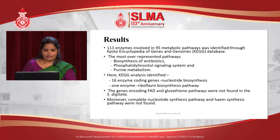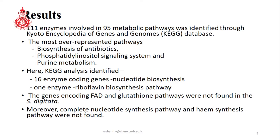In the results, 111 enzymes involved in 95 metabolic pathways were identified through the KEGG database. The most overrepresented pathways are biosynthesis of antibiotics, phosphatidylinositol signaling system, and purine metabolism. KEGG analysis identified 16 enzyme-coding genes involved in nucleotide biosynthesis and 1 enzyme involved in riboflavin biosynthesis pathway. The genes encoding FAD and glutathione pathways were not found in Cetaria Digitata.